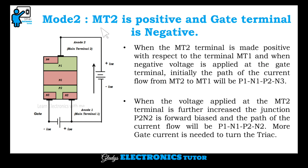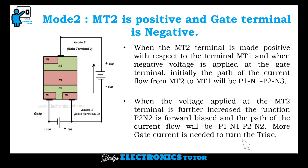Next is mode 2: MT2 is positive and gate terminal is negative. When MT2 terminal is made positive with respect to MT1 and negative voltage is applied at the gate terminal, initially the path of current flow from MT2 to MT1 will be P1, N1, P2, and N3. When the voltage at MT2 is further increased, junction P2-N2 becomes forward biased and the path of current flow will be P1, N1, P2, N2. More gate current is needed to turn on the TRIAC.